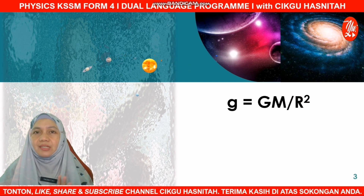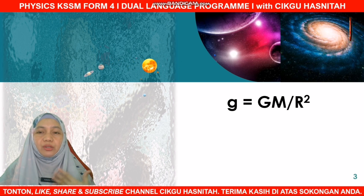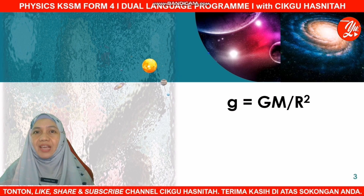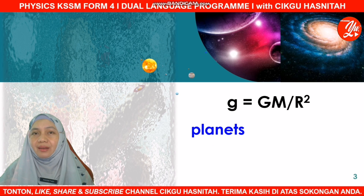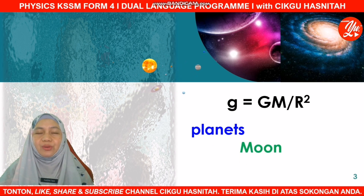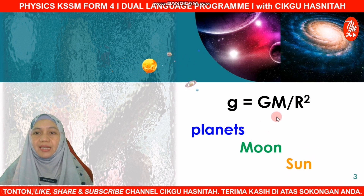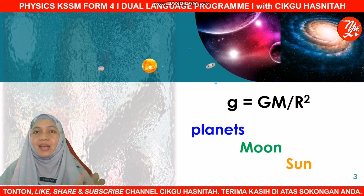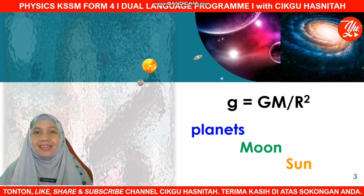For your information, gravitational force is a universal force. So this formula is not only applicable to measure gravitational acceleration on the Earth's surface, but it can also be used to find the gravitational acceleration on the surface of other objects — for example, a planet, the moon, and the sun. When looking for gravitational acceleration for these bodies, M refers to the mass of each planet, moon, or sun, and r refers to the radius of each.